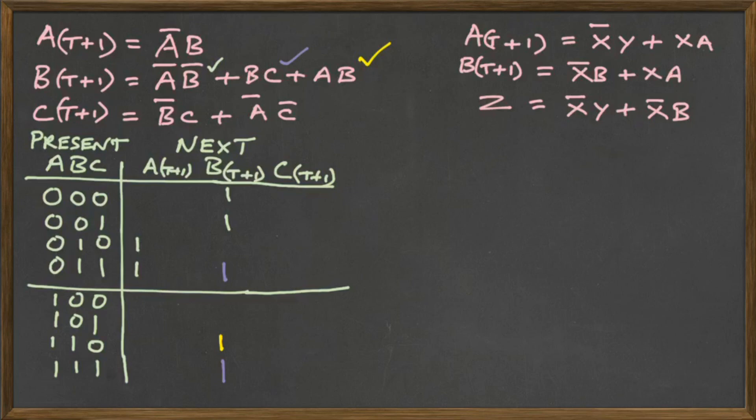So the purple one in the seven position, one, one, one on the A, B and C applies to both the BC and the AB as shown. Then we do the B bar C when B is a zero and C is a one. And then finally we do the A bar C bar when both A and C are zero. So if it's not a one, then it has to be a zero. So we go throughout the table, putting in the zeros as shown.